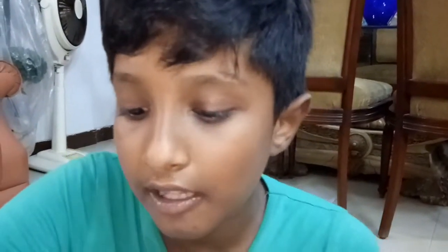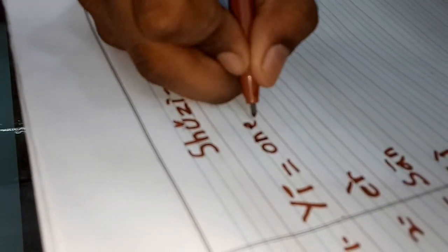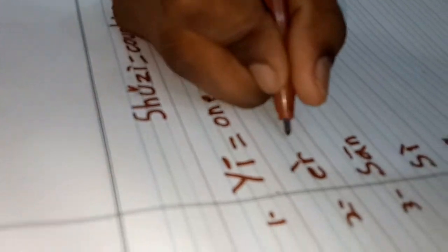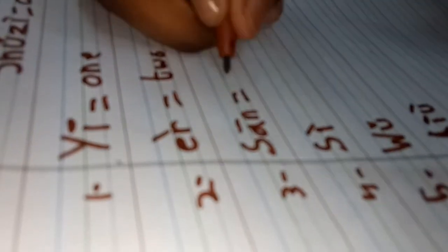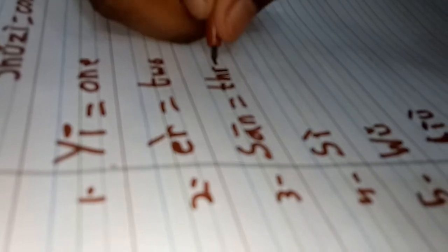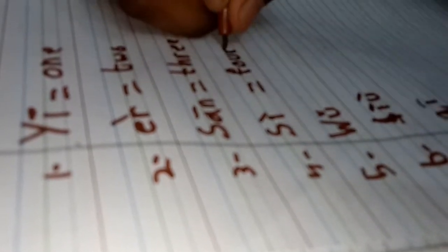Guys, if you like my video, make sure to like it. Now I will write them. Yi means one, O-N-E. Er means two, T-W-O. San means three, T-H-R-E-E. Si means four, F-O-U-R.